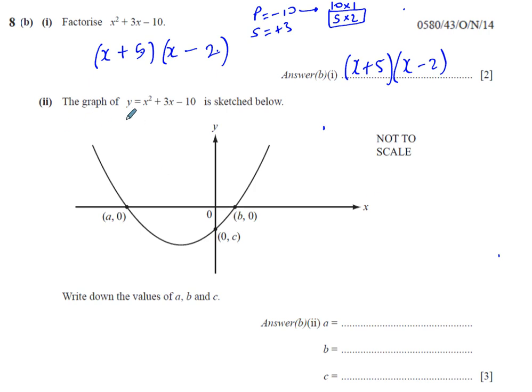Now, B part 2, we have a quadratic equation which is sketched in this diagram. And we are asked to find the values of A, B and C. A, B and C are the places where the curve passes through the x axis and the y axis.